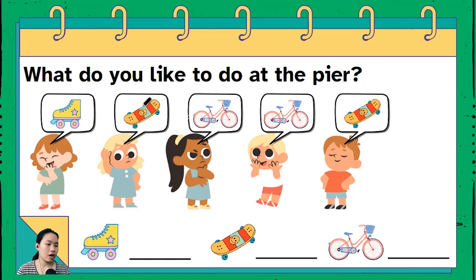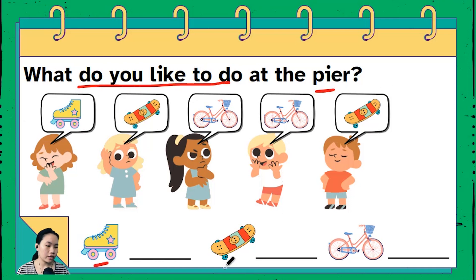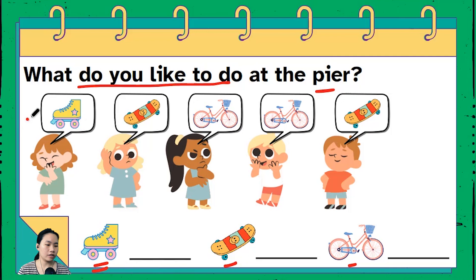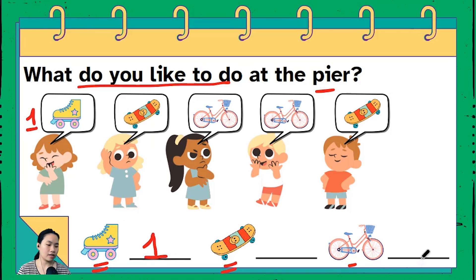The question is: what do you like to do at the pier? You can roller skate, you can skateboard, or you can do bicycle. Let's count how many kids want to do each activity. For the roller skate, we have one girl over here who says she likes to roller skate, so I'm gonna put the number one here.